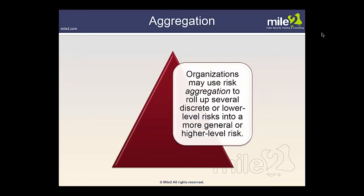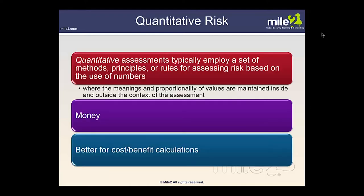Organizations can use risk aggregation to roll up several discrete lower-level risks into a more general higher-level risk. Risk aggregation can also be used to efficiently manage the scope and scale of risk assessments involving multiple information systems and mission business processes with specified relationships and dependencies. Risk aggregation is conducted primarily at Tiers 1 and 2 and occasionally Tier 3, and it assesses overall risk to organizational operations, assets, and individuals given a set of discrete risks.